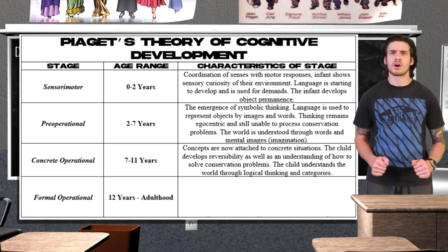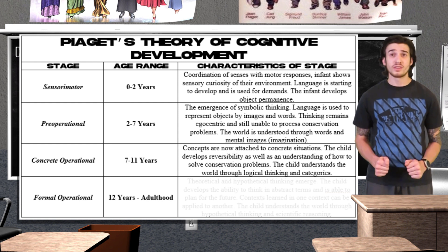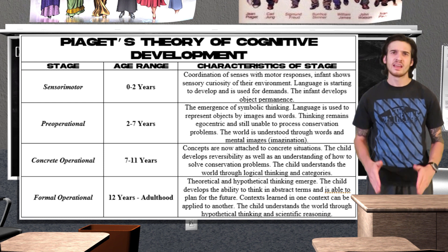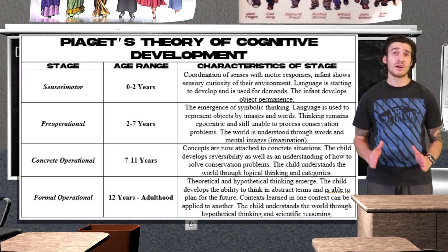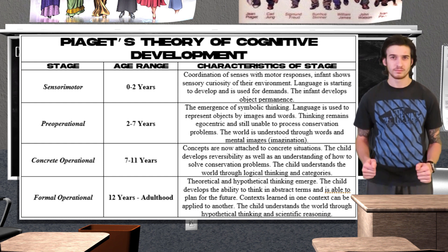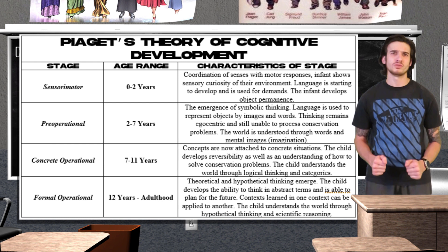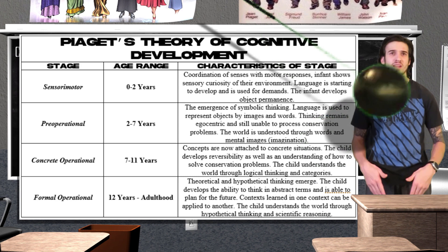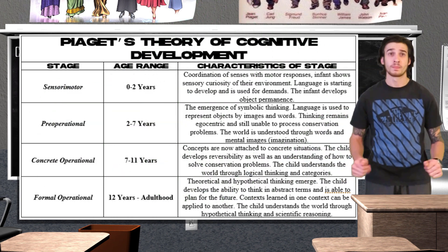By age 12, we reach the final level of cognitive development: the formal operational stage. New to this stage is our ability to think in abstract terms. Children in this stage are able to think hypothetically as well as deduce potential consequences, plan for the future, and think creatively.